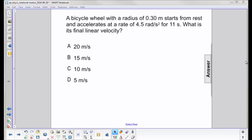A bicycle wheel with a radius of 0.30 meters starts from rest and accelerates at a rate of 4.5 radians per second squared for 11 seconds. What is its final linear velocity?